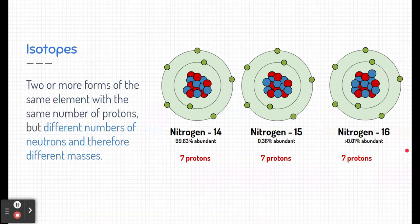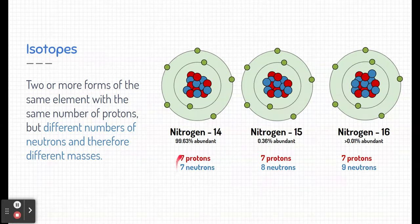What does change about them is their neutrons. The neutrons in the middle can change. So here, nitrogen-14 has seven protons and seven neutrons. Hey, seven plus seven is 14. So this number right here just represents the mass of that isotope.